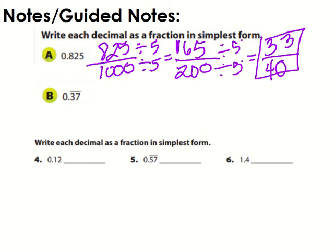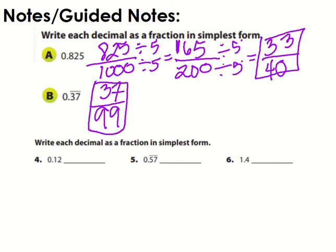B is a little different because it's a repeating decimal, and repeating decimals have an interesting pattern and trick. The first thing to do is take whatever set of digits are repeating and put them as your numerator. 37 is what's repeating, so I put 37 as my numerator. Because I have two digits repeating, I will put two nines as the denominator. Since 37 and 99 do not have anything in common, that is your simplest form.